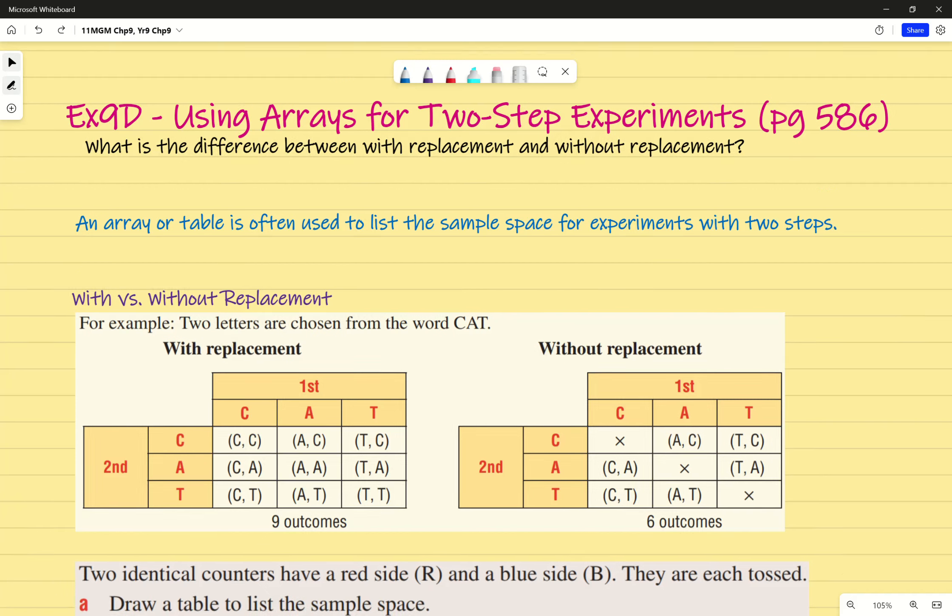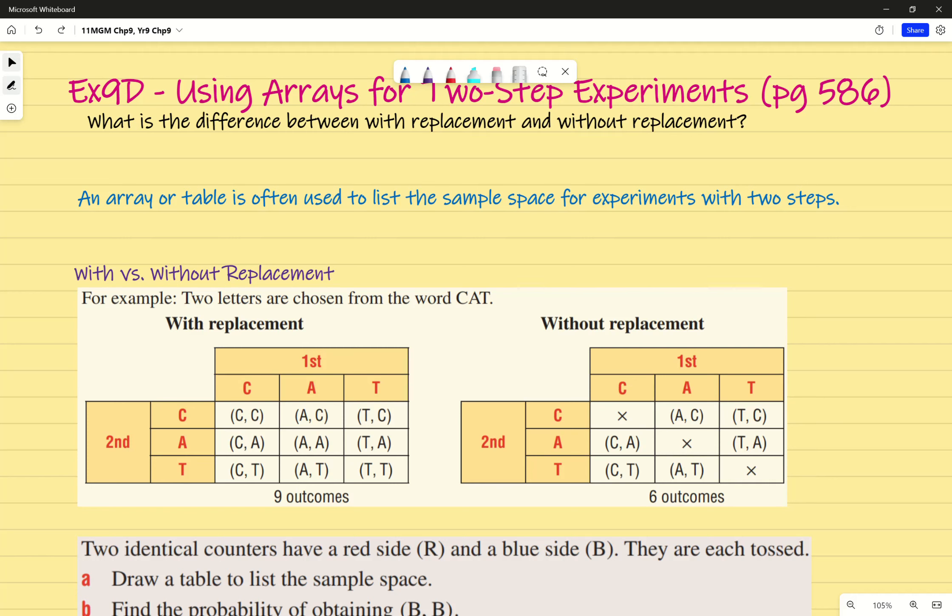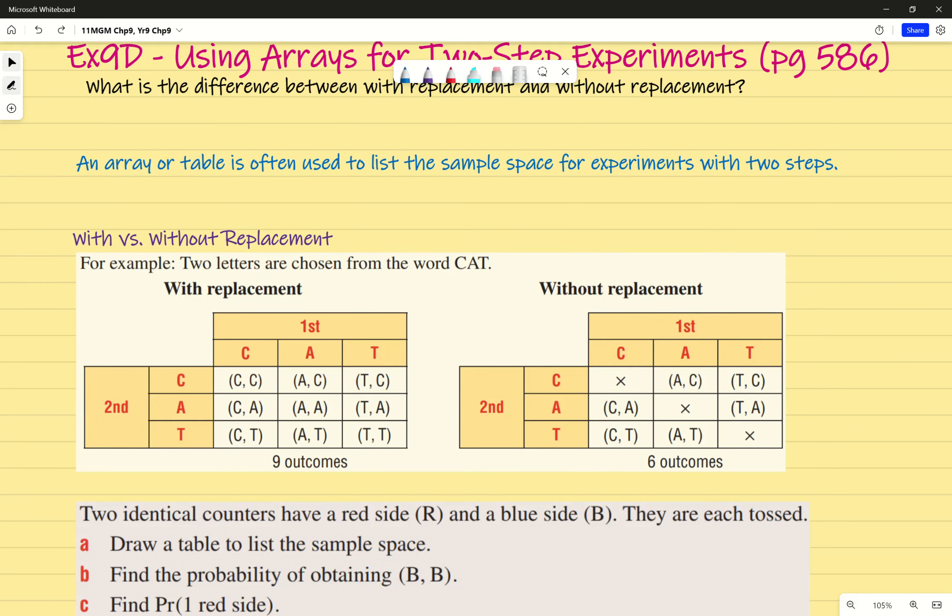An array or table is often used to list the sample space for experiments with two steps. So again, we can go first step, second step.